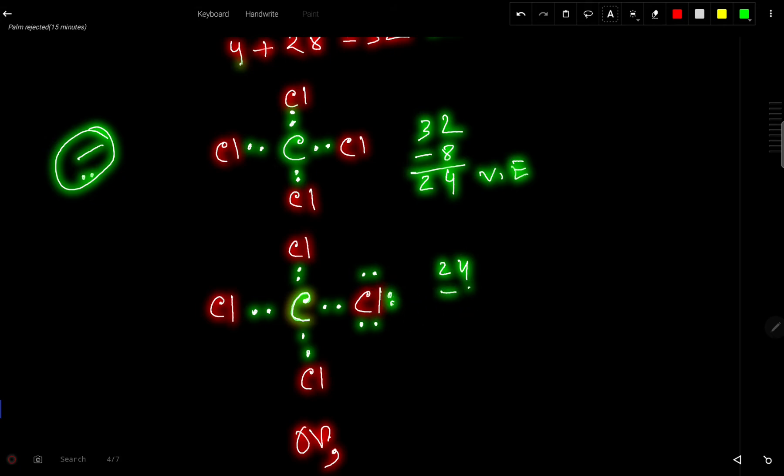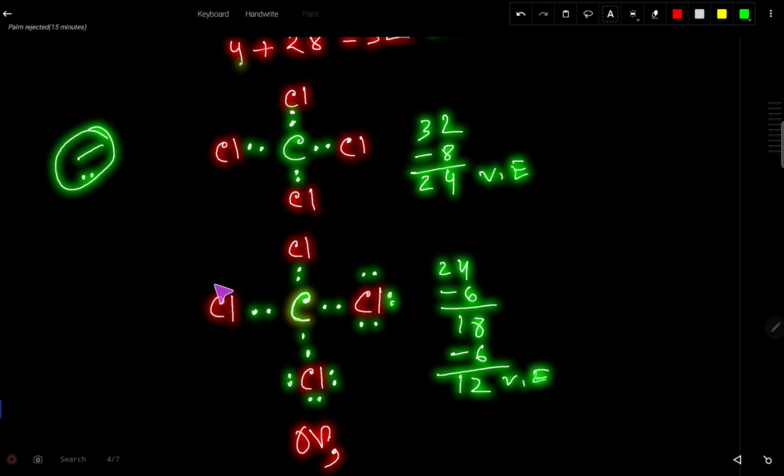So out of 24 we have used here six, so we have left 18. Now we have to satisfy the octet for the second chlorine atom. So we have used here six, so we have 12 valence electrons left.